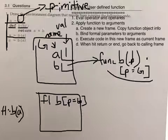And then bind the formal parameter to the argument. So the formal parameter B is bound to the argument which we saw was 1. And now this will be your current frame. So we execute the code A plus B within the current frame.